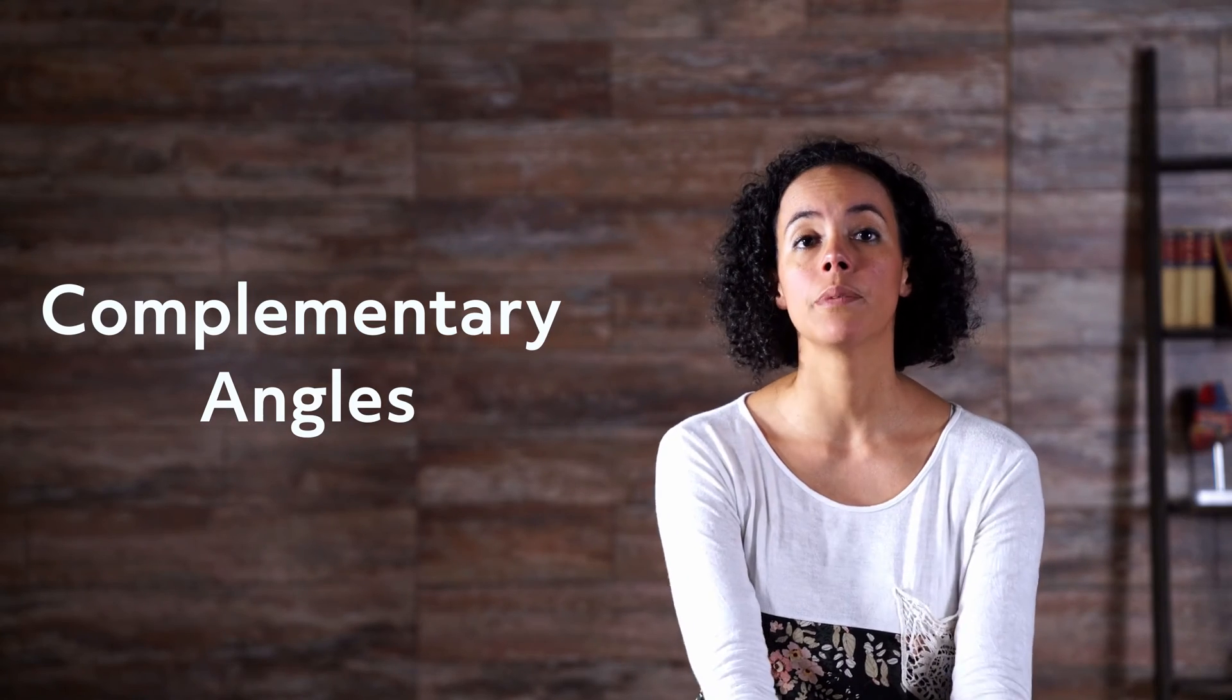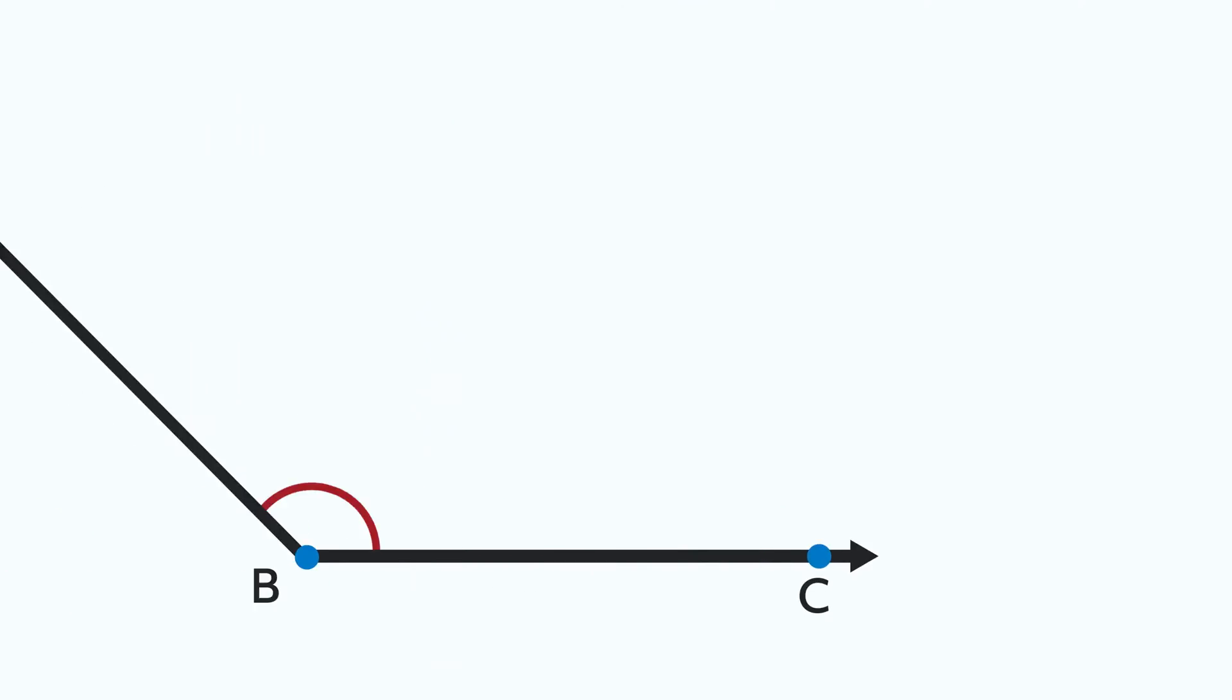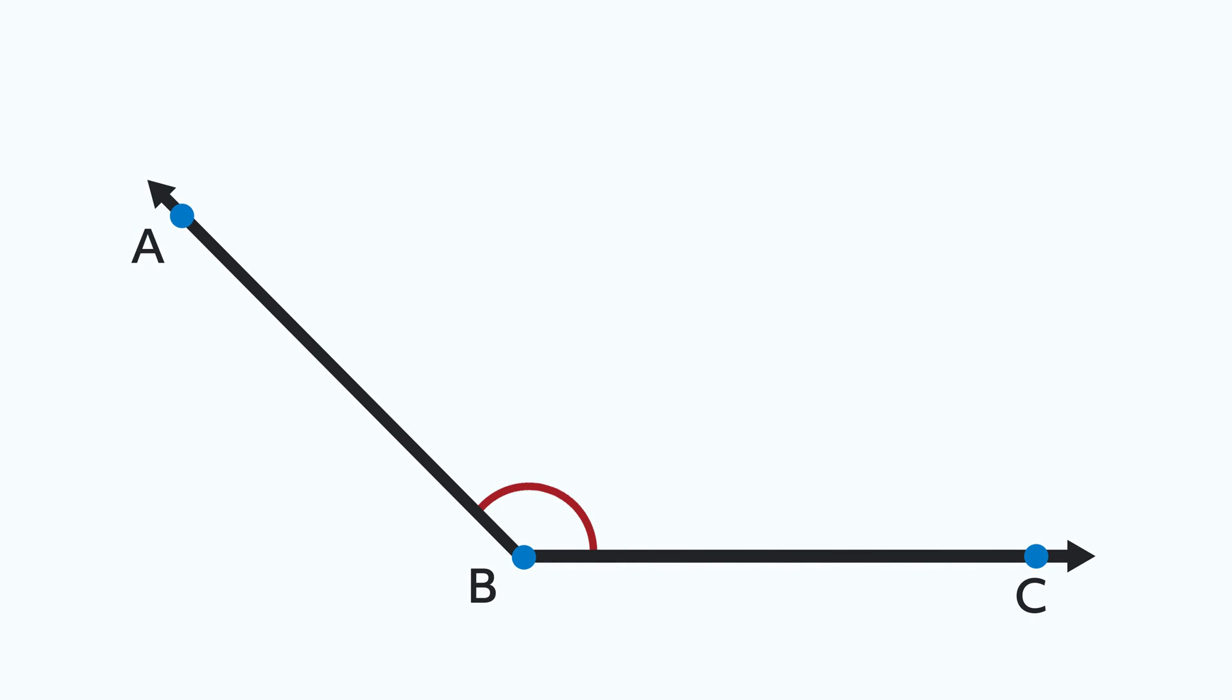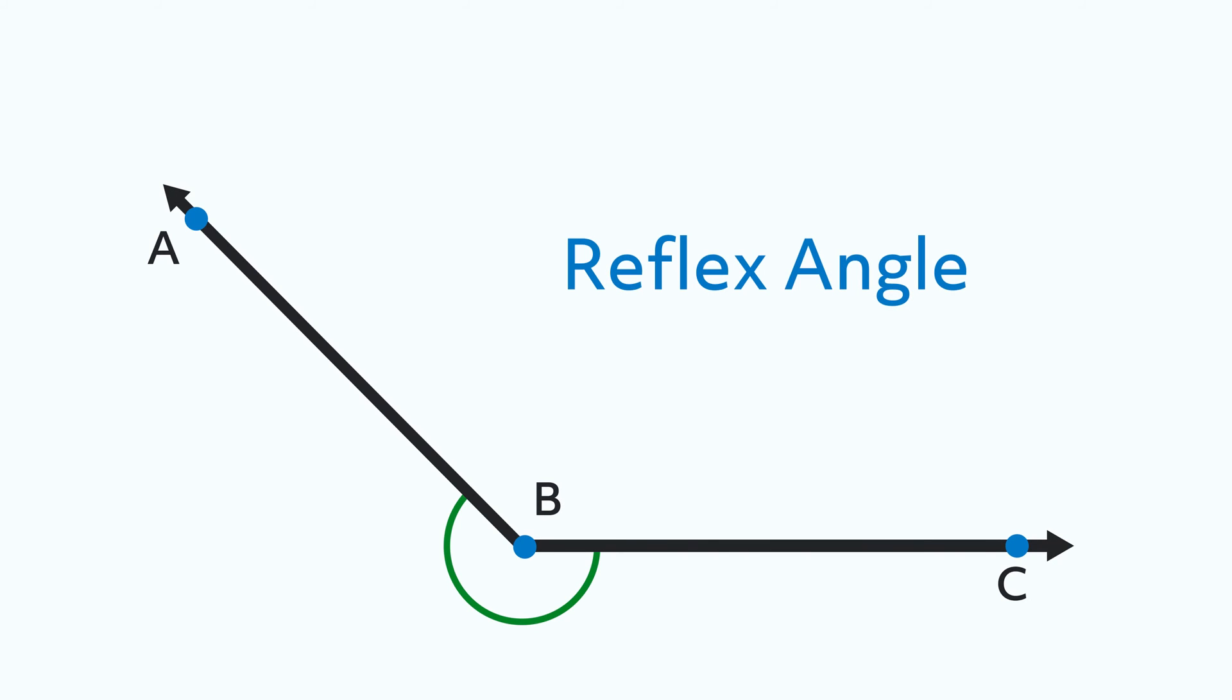Let's go back to our obtuse angle one more time. There's one more type of angle that's been hiding in plain sight that we need to be aware of. We can see that angle ABC is an obtuse angle, which means it's more than 90 degrees and less than 180 degrees. But what about the other side?